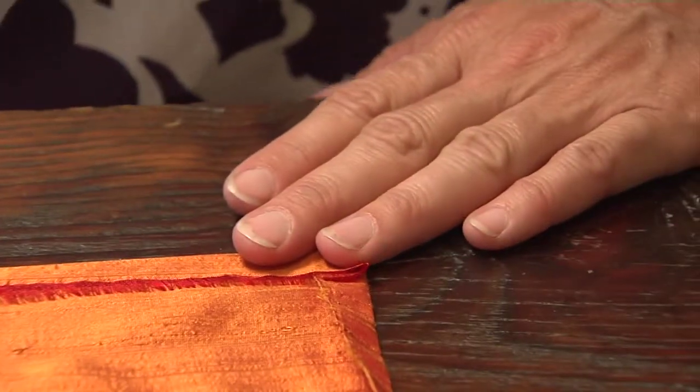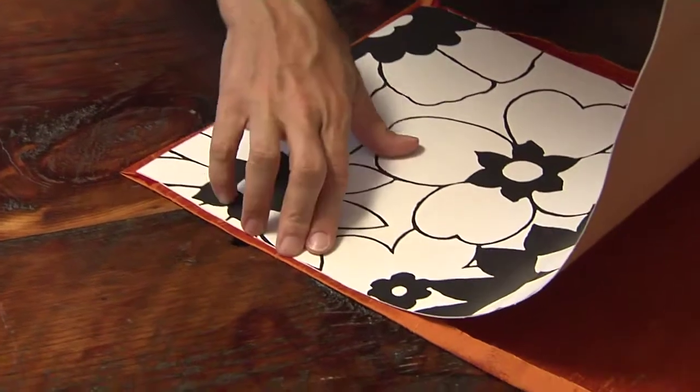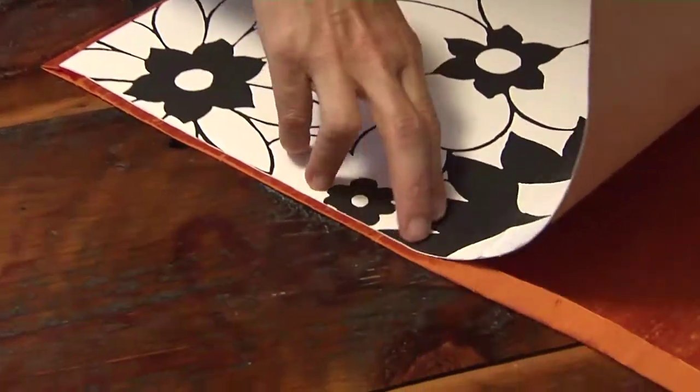Next, fold and iron both short and long sides of the fabric by a half inch. Then slowly peel back the other side of the adhesive while you attach it to the fabric.